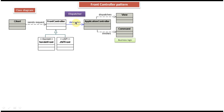Once it performs the common operations, it may use the dispatcher to delegate the request to the application controller. Once the application controller receives the request, based on the request it invokes the business logic. The business logic will in turn invoke the DAO layer, and the DAO layer in turn invokes the database to get the information required for the corresponding request. That information is then passed back to the application controller.